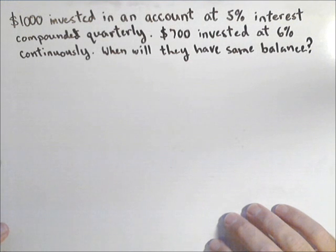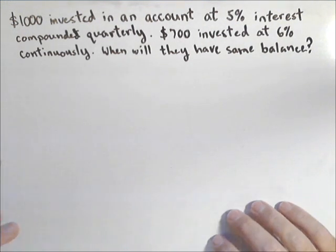In this video, we're going to talk about how to find when two different bank accounts with two different initial values and two different compounding periods and two different rates are equal. Basically, we're looking to find when two exponential functions are equal to each other. This technique will work for any two exponential functions. We're going to do it algebraically, and then we'll talk about using the graphing calculator.